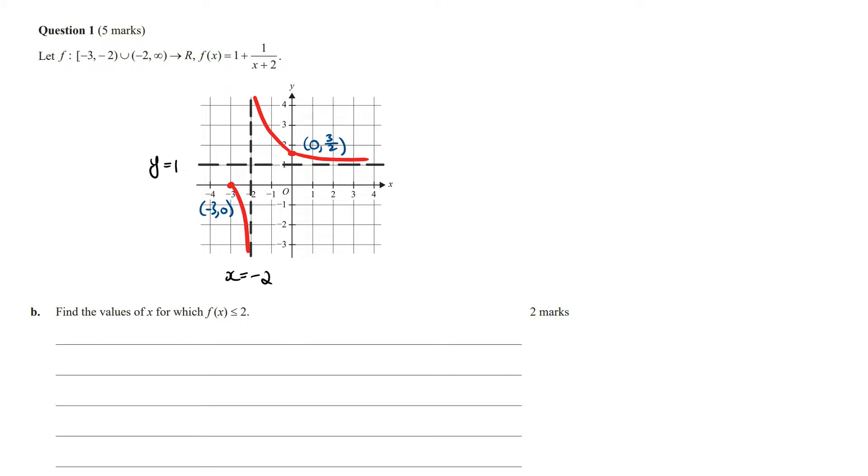Find the values of x for which f(x) ≤ 2. The line y = 2 is going to be this line, and so for f(x) to be less than or equal to 2, we're going to need to have the x values in this region and in this region. We need to work out the x-coordinate where f(x) equals 2 in the first quadrant. If we let 1 + 1/(x + 2) = 2, solving for x we're going to get 1/(x + 2) = 1, which means x + 2 = 1, so x = -1.